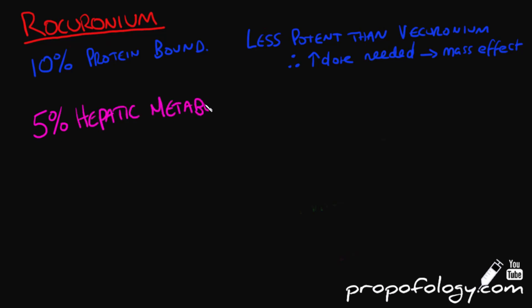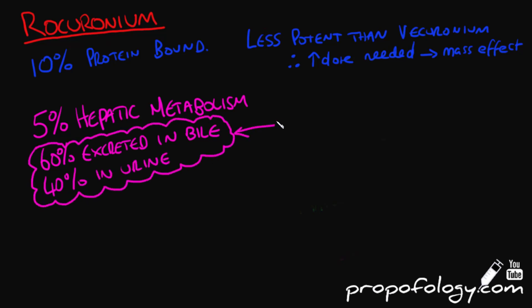On to metabolism and excretion: it's only 5% metabolized by the liver. It's 60% excreted in bile and 40% excreted in urine. So therefore, if you've got liver or renal failure, the duration of action of rocuronium can be increased.